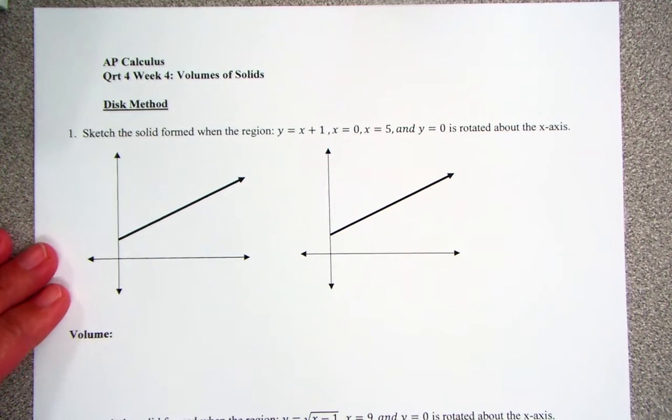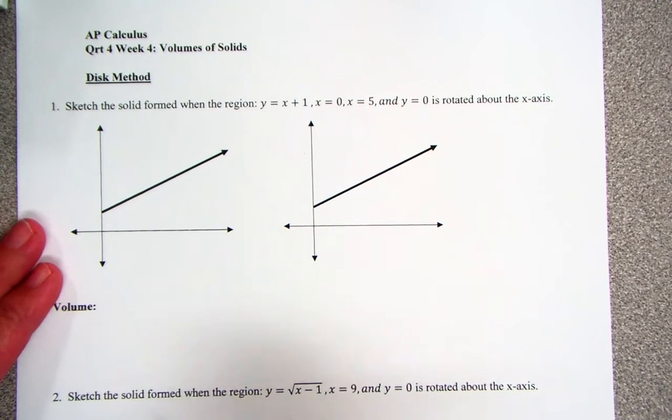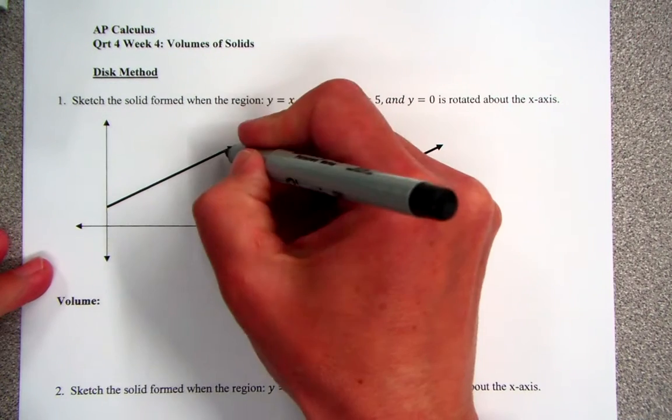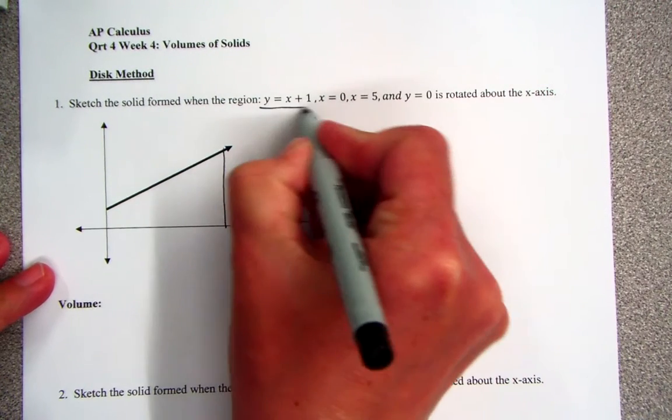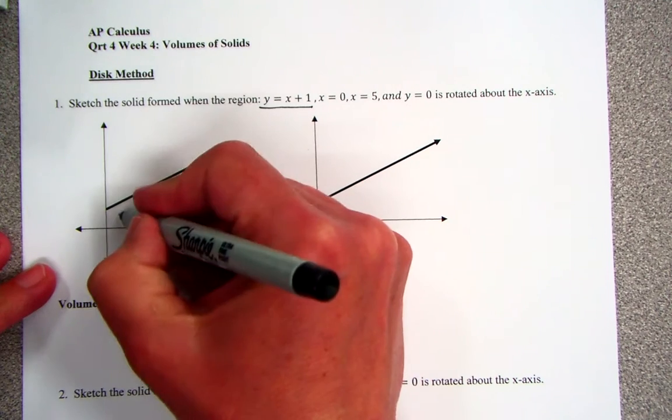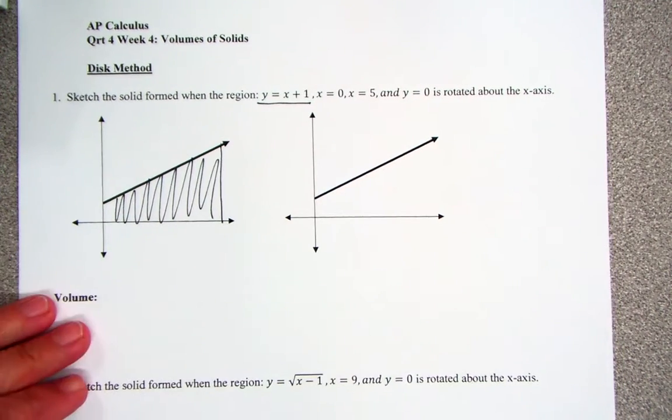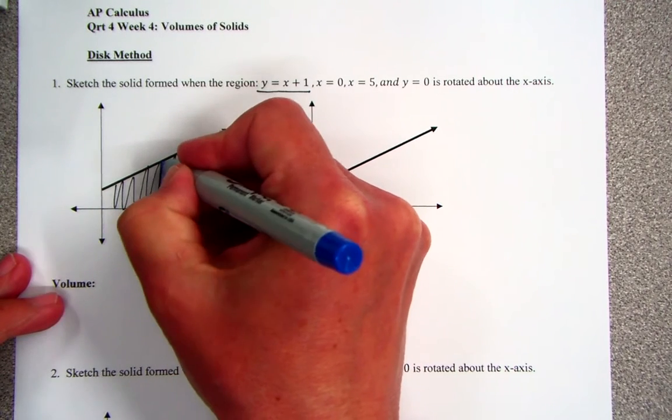What we've been doing is finding area between two curves. So what we're going to do is look at that in the same shape. We have this line that was given to me, y equals x plus 1 from 0 to 5. And we were finding the area underneath this curve. And we did it by adding up a whole bunch of rectangles.